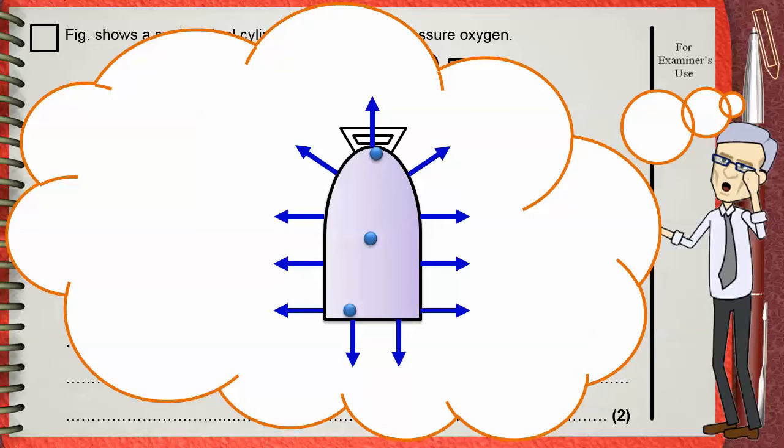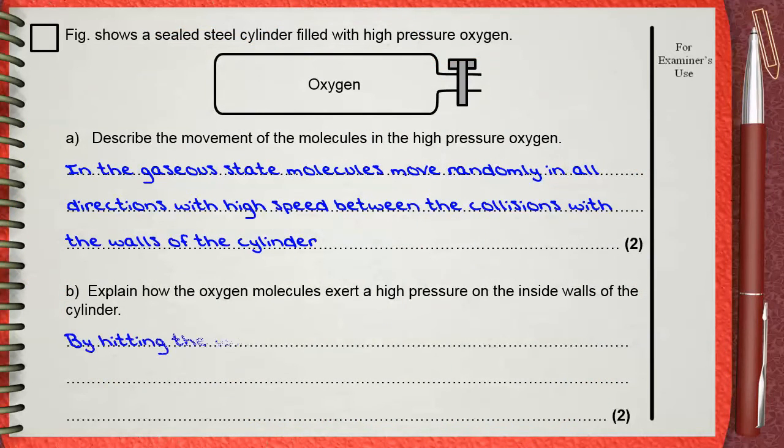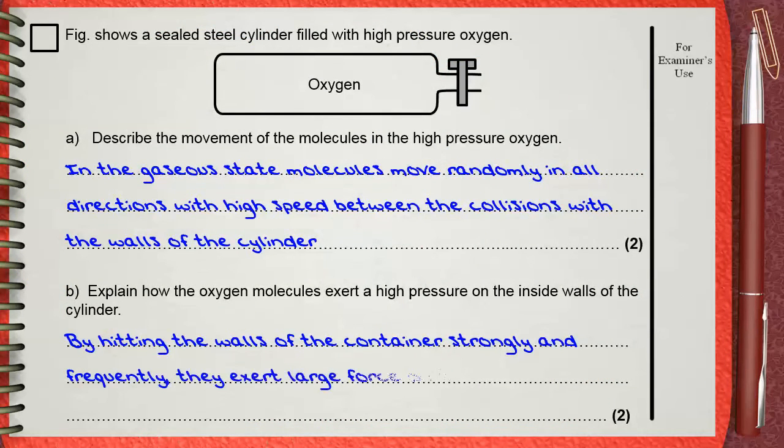If you divide the total force by the total area, you get the force per unit area and this is the pressure. So we will say that by hitting the walls of the container strongly and frequently, they exert large force on the inner walls of the cylinder, causing high pressure.